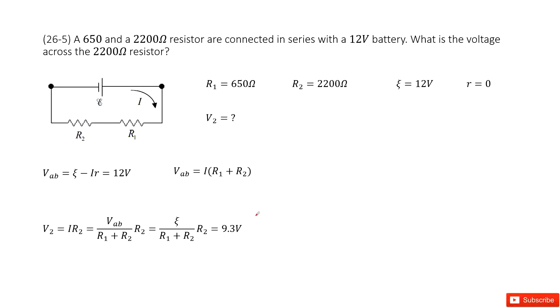So you can see we have two resistors, R1 and R2, right? One is 650 ohms. The second one is 2200 ohms, connected in series with a battery.